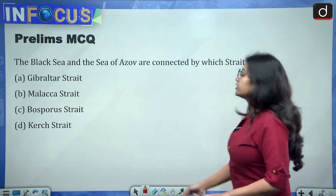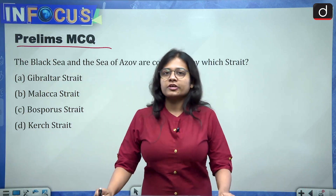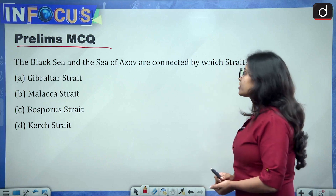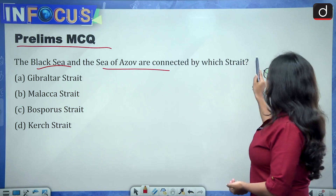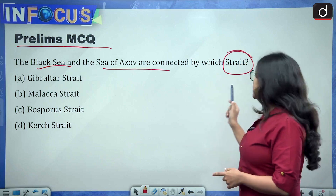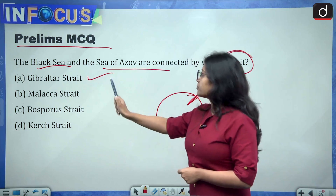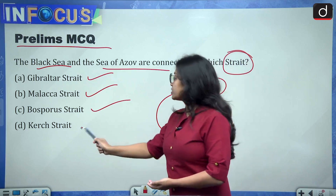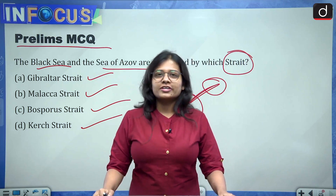Now let's see the last slide for today. As already mentioned, your practice question is the one about the strait connecting the Sea of Azov and the Black Sea — tell me the correct answer in the comment section. That's all for today. Thank you so much for watching. Till we meet next time, keep reading and keep writing.